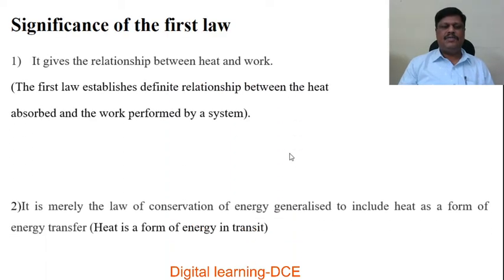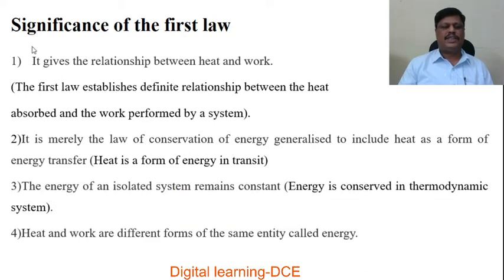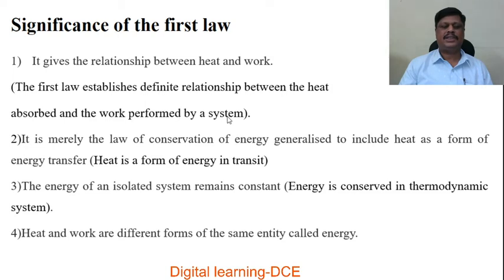What are the significances of the first law of thermodynamics? First significance: it gives the relationship between heat and work. The first law establishes a definite relationship between the heat absorbed and the work performed by a system, expressed as dQ = dU + dW, where dQ is heat supplied, dU is internal energy change, and dW is work done.